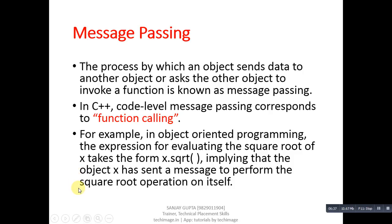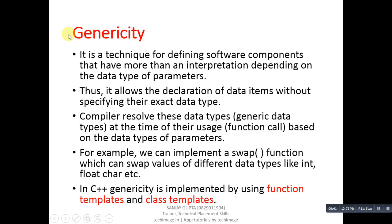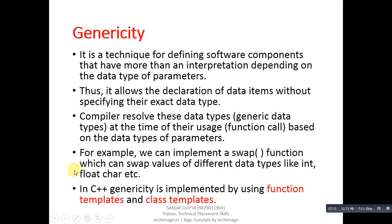The next feature is genericity. It is a technique for defining software components that have more than one interpretation depending on the data type of parameters. It allows the declaration of data items without specifying their exact data type — the compiler resolves these generic data types at the time of their use, based on the data types of parameters. For example, we can implement a swap function which can swap values of different data types like int, float, char, etc. In C++, genericity is implemented using function templates and class templates.